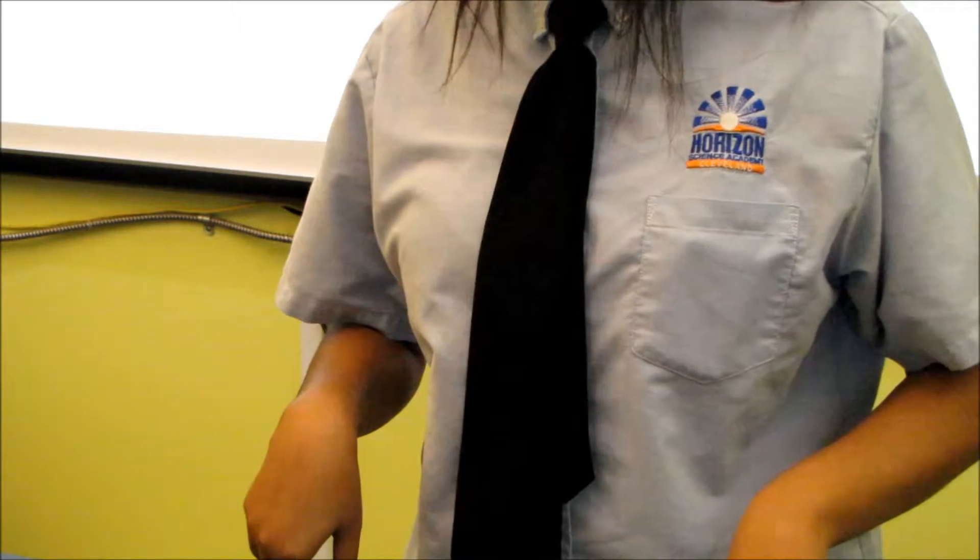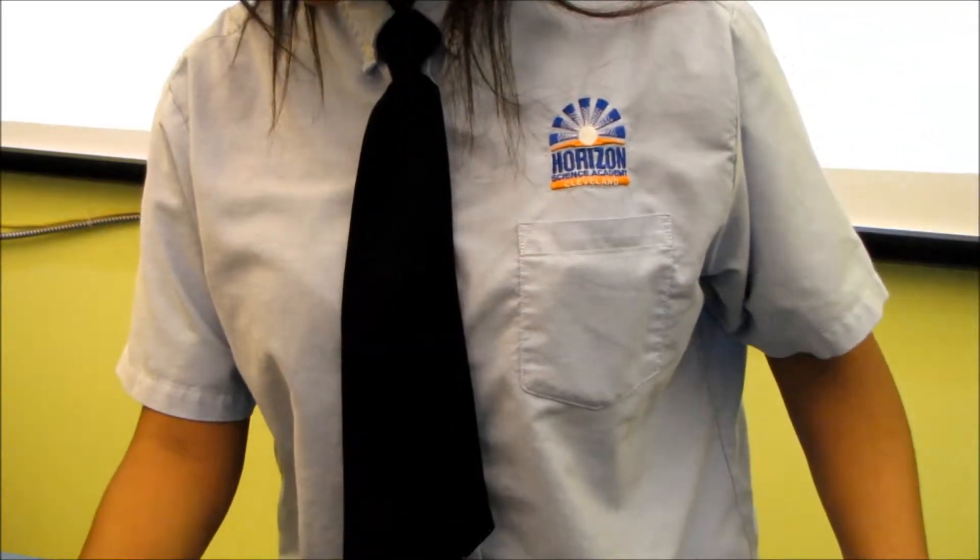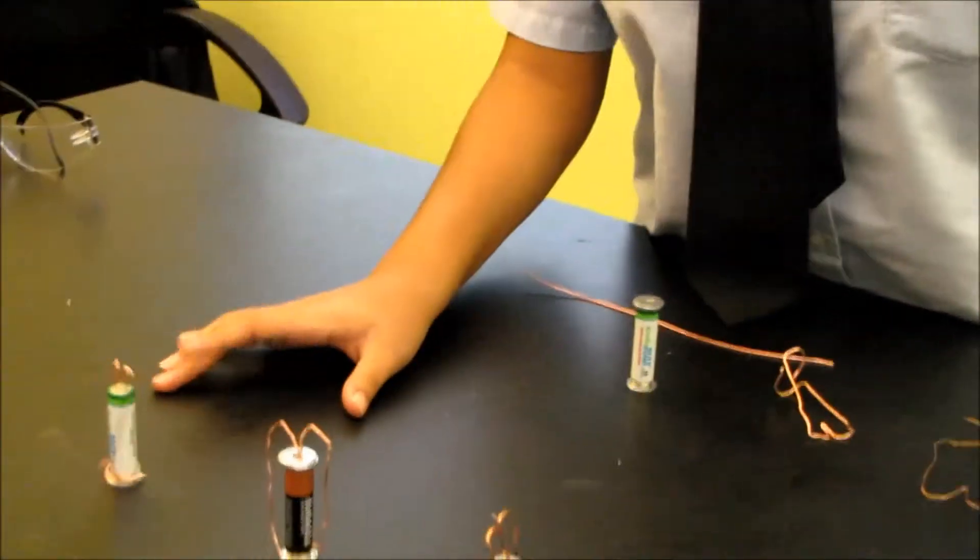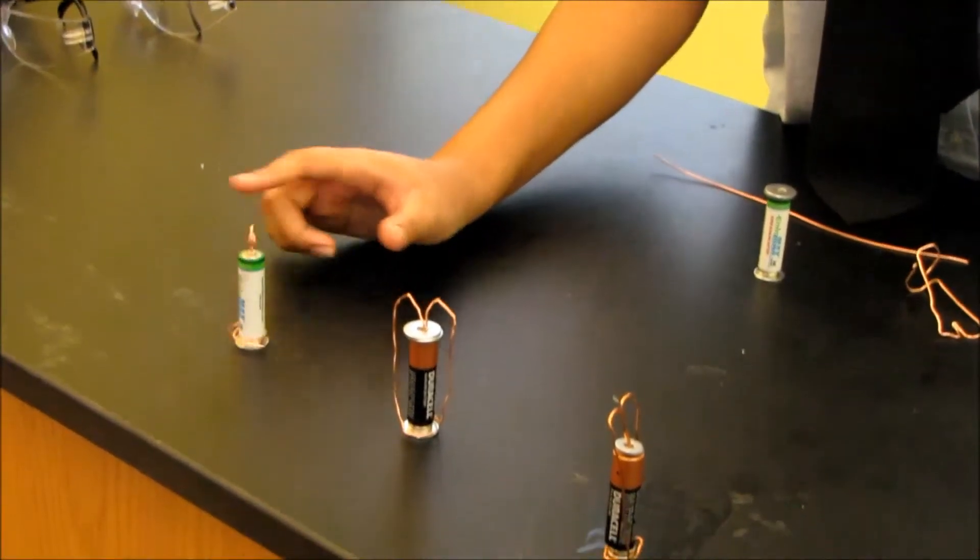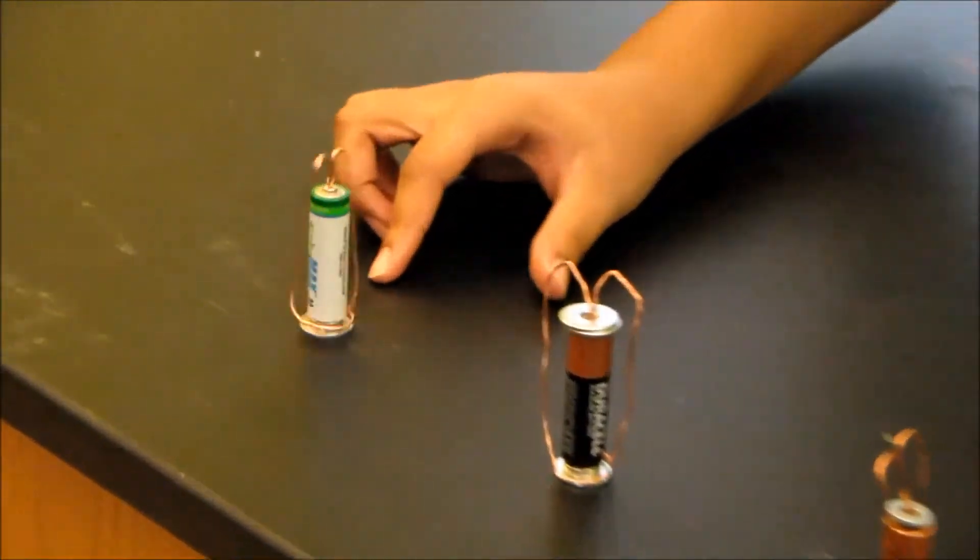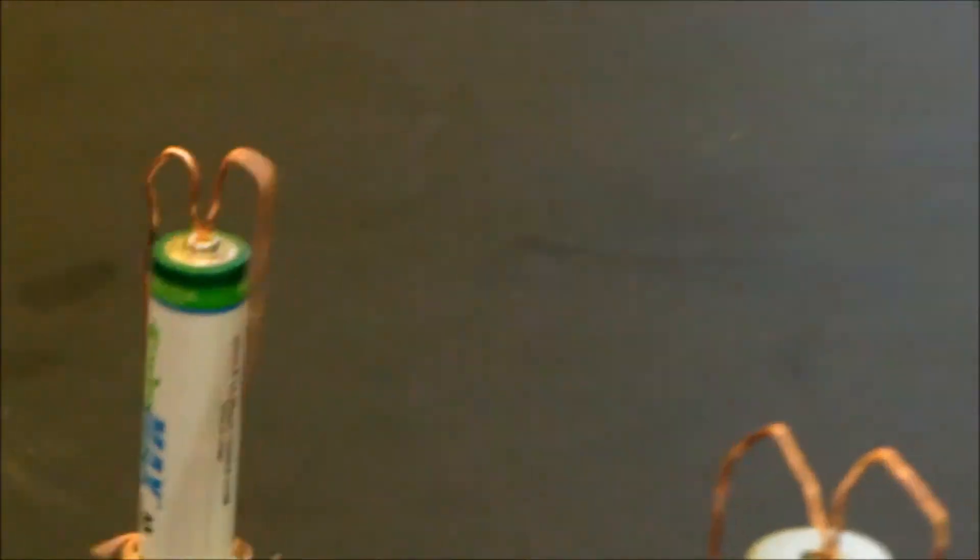This works because current flows through the wire from the battery's positive port through the wire radially into the magnet into the battery's negative port.